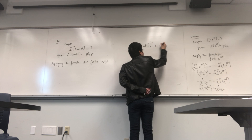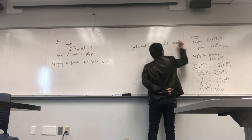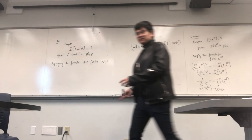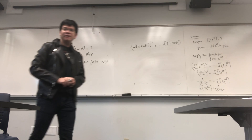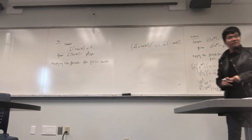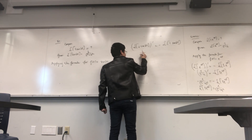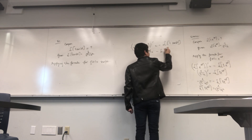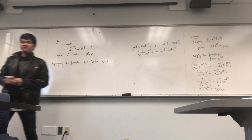Applying the formula: L{sin(Bt)} prime equals minus L{t · sin(Bt)}. This means [B/(s² + B²)]' = minus L{t · sin(Bt)}.